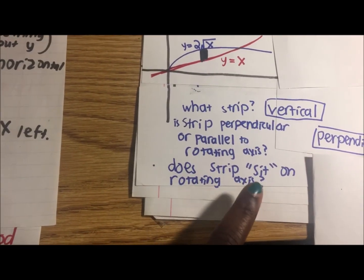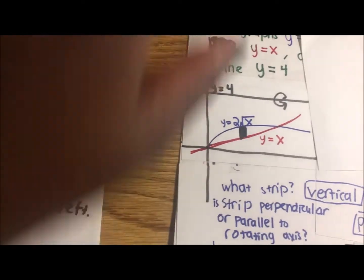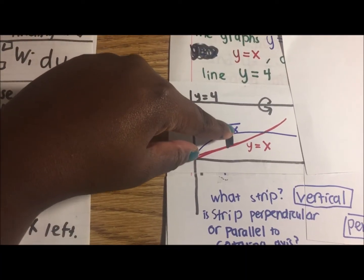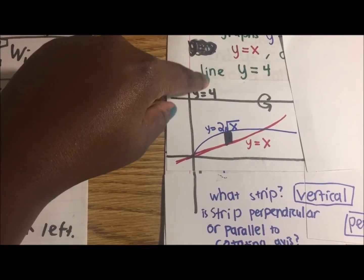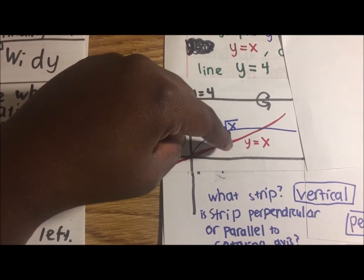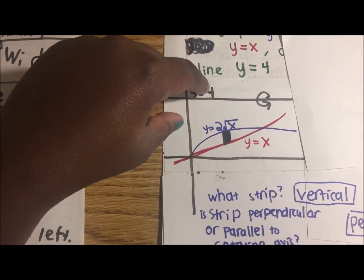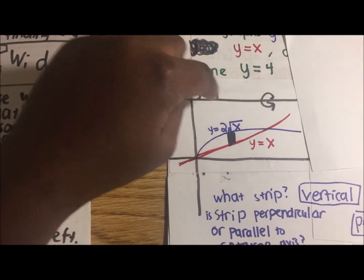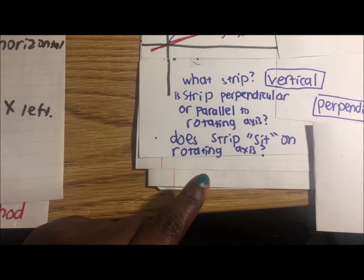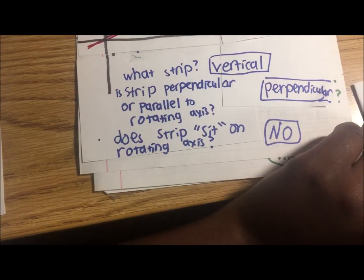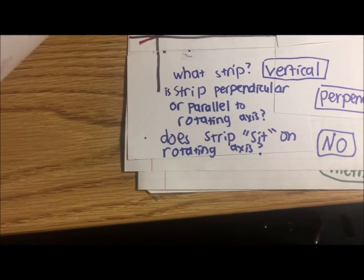Does the strip sit on the rotating axis? No, it does not. The strip is all the way down here and does not touch the rotating axis at all.